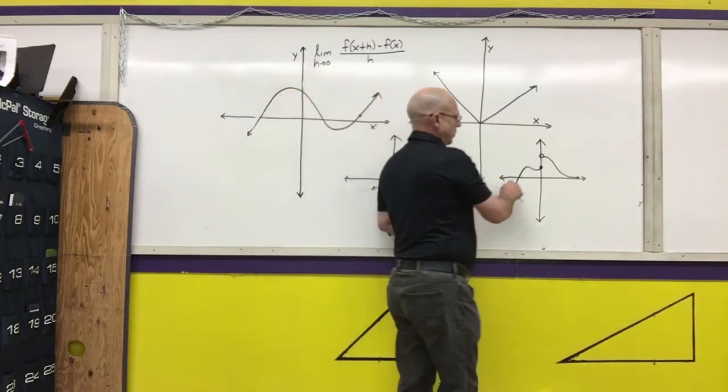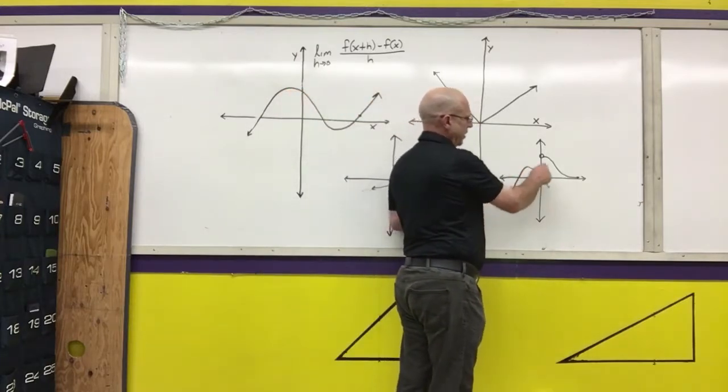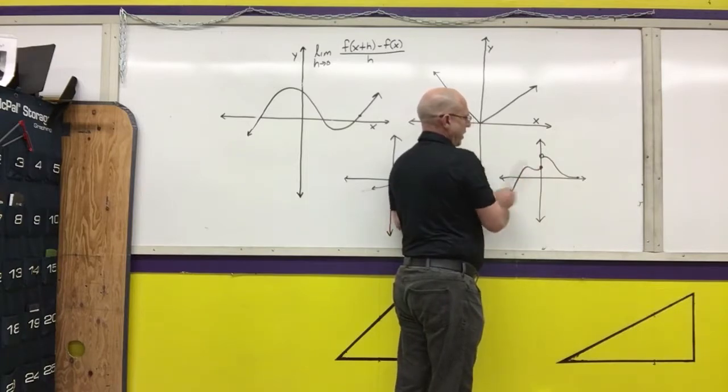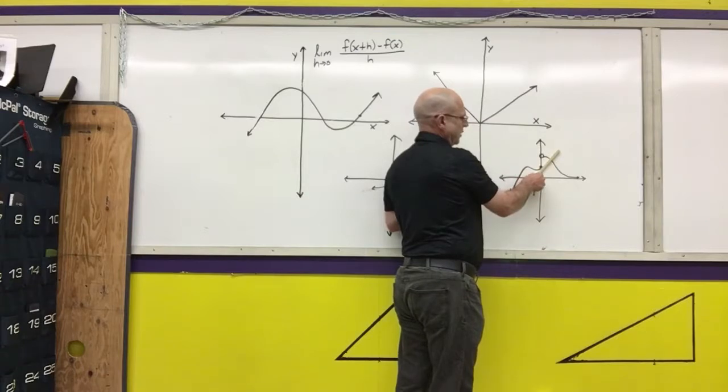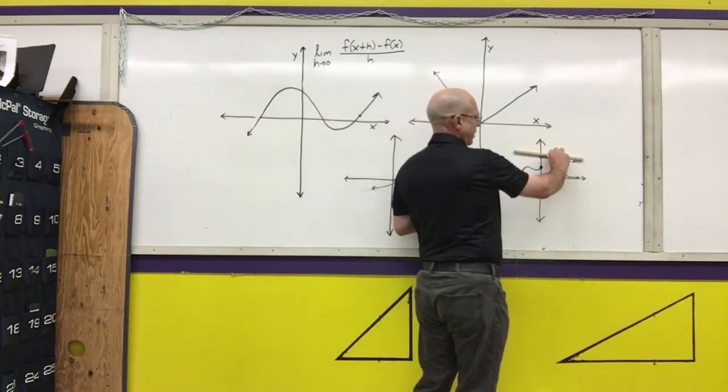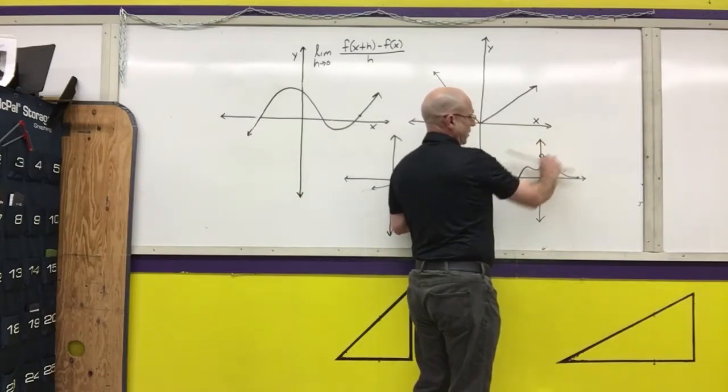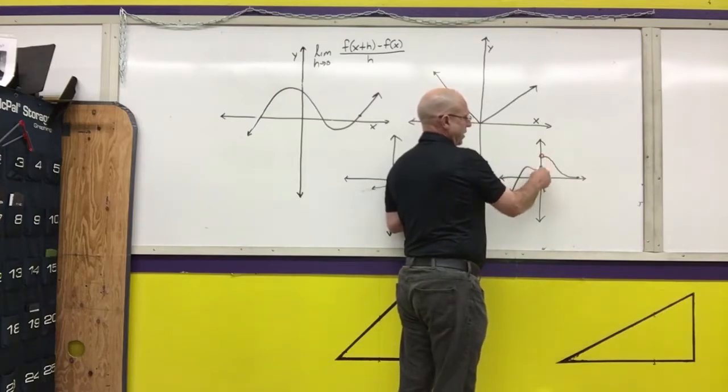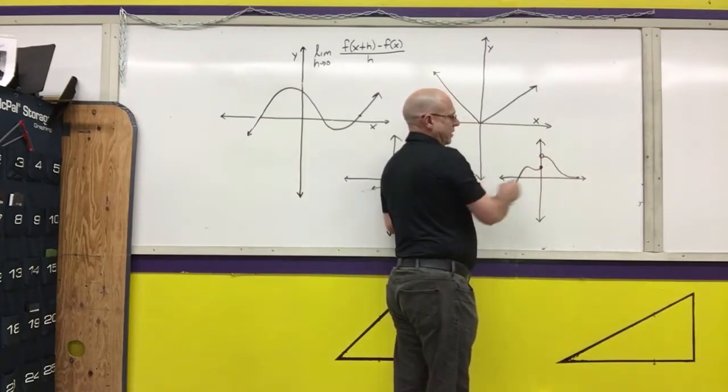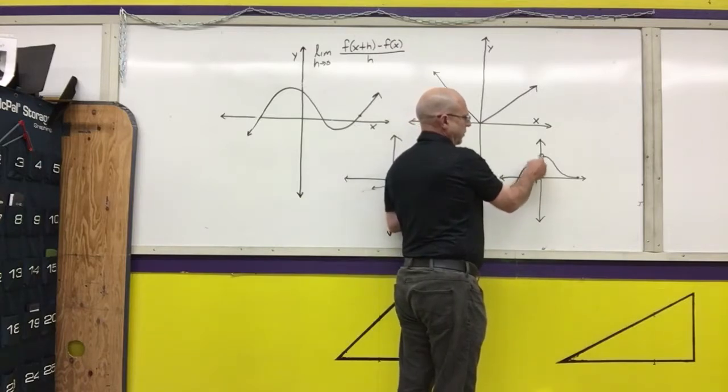Another function where there's a point that you cannot differentiate would be here, where if I'm coming in from the left, my slope is approaching a positive value. If I'm coming in from the right, it's approaching horizontal. But notice that my graph here is not continuous. If the graph is not continuous, then I cannot find the derivative at that point.